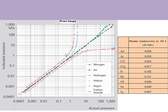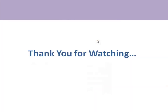The Pirani gauge is gas-dependent. If a gauge calibrated for air is used for argon, which has lower thermal conductivity than air, the gauge will show lower pressure values even when actual pressure is higher, because less heat is transferred by argon. Conversely, if used for helium, which has higher thermal conductivity, the gauge will show higher pressure even when actual pressure is lower. Therefore, the gauge must be calibrated for the specific gas being measured, as each gas has a different thermal conductivity value.